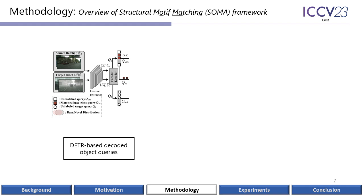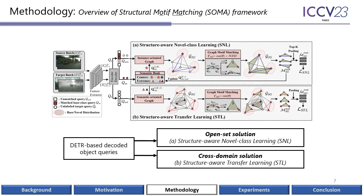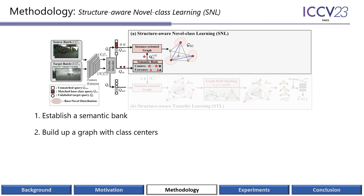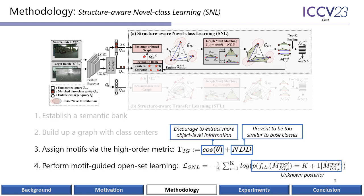We deploy our idea on the decoded object queries of the detection transformer, including the structure-aware novel class and transfer learning modules for the open-set and cross-domain solutions respectively. Specifically, in the source domain, we first approximate the class centers and extremes and save this information in a semantic bank. Then we build a graph by connecting different class centers and linking object queries with class centers. After that, we assign a motif for each object query to extract high-order patterns for open-set learning, guided by a high-order metric gamma. The gamma can encourage the motif to extract more object-level information, but also prevent it from being too similar to some base classes. Finally, we use the top key motifs with object-level information to optimize the unknown posterior for open-set learning.